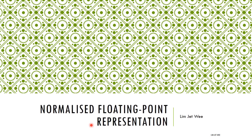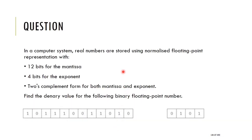We're going to look at normalized floating point representation, which tends to be a bit difficult for a number of students. Here's a typical question: in a computer system, real numbers (decimal numbers) are stored using normalized floating point with 12 bits of mantissa, 4 bits for exponent, using two's complement for both mantissa and exponent. We need to find the denary value. If you'd like to try the question, pause the video now.